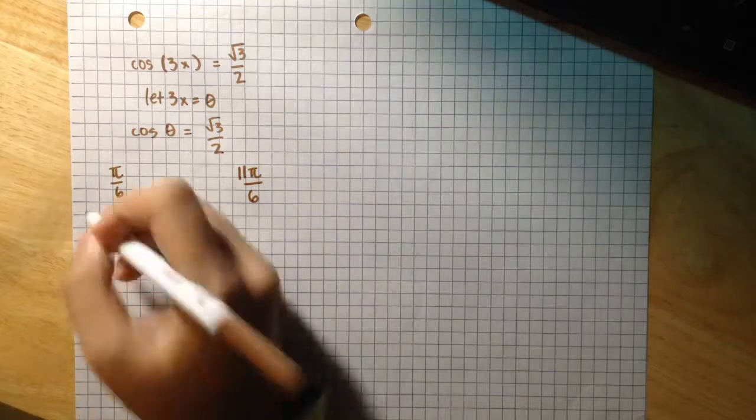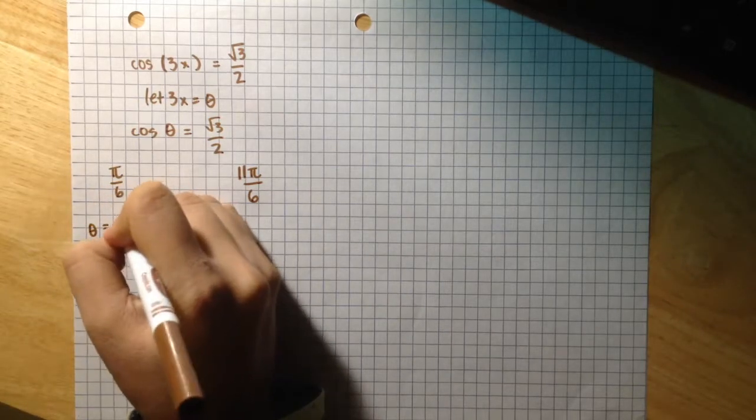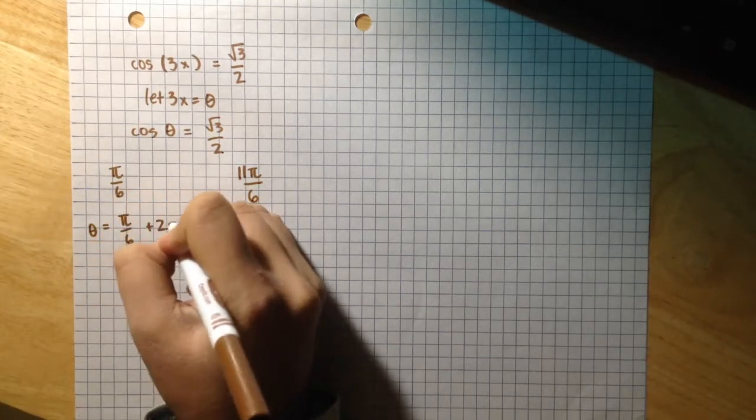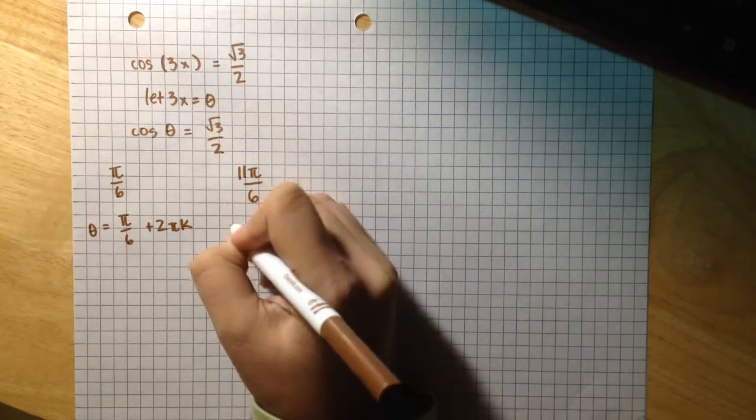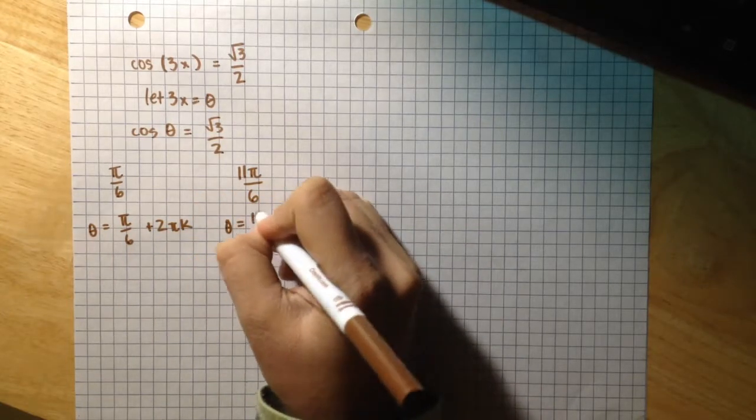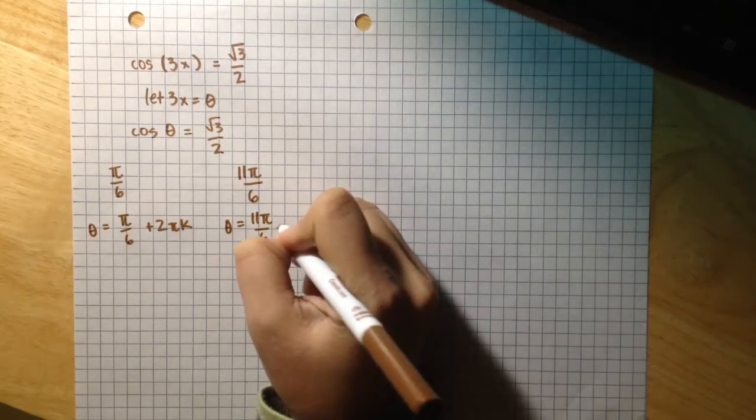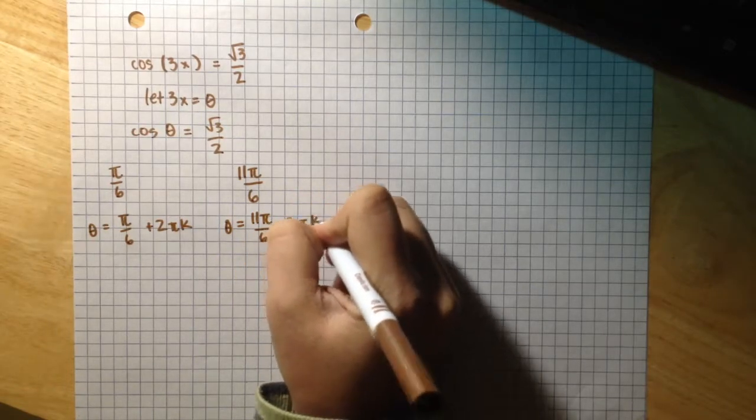So theta equals π over 6 plus 2π k, and theta equals 11π over 6 plus 2π k.